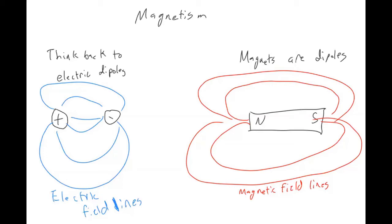So for things like a bar magnet or, as I'll show you in a second, like an atom, you're going to have field lines that look like this, because magnets at their most fundamental level are dipoles.